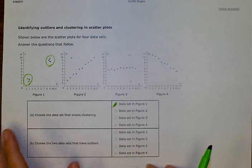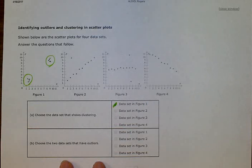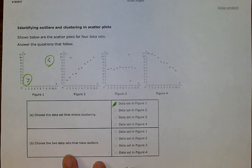All right, now on B. Choose the two data sets that have outliers. Outliers are numbers that don't fit the pattern. Right, they are outside of the line.